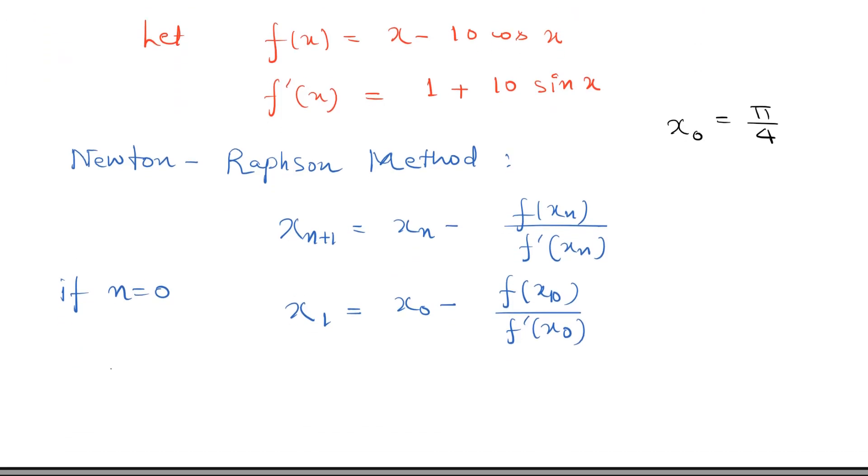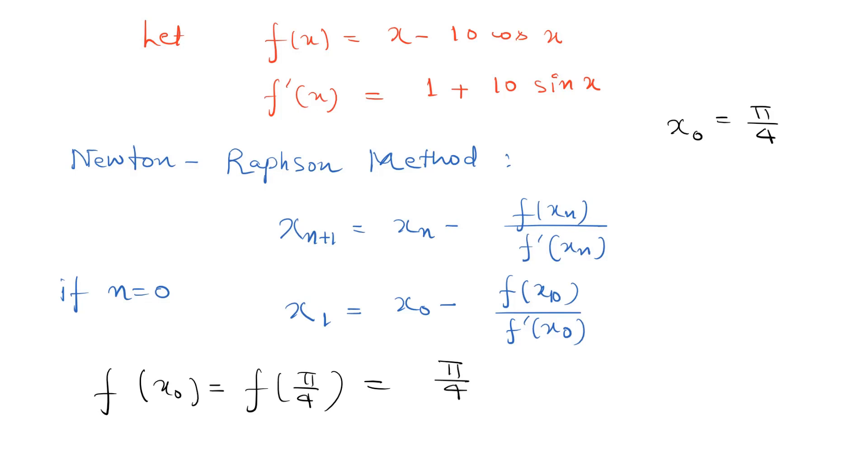Now let's find f(x₀), that is f(π/4). So f(π/4) will be equal to, if we substitute here in this equation, π/4 minus 10 times cos(π/4). So this value will be equal to negative 6.286.